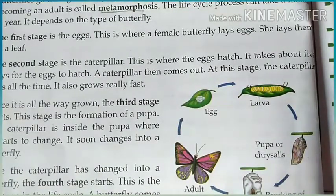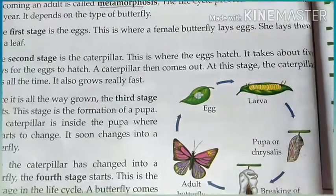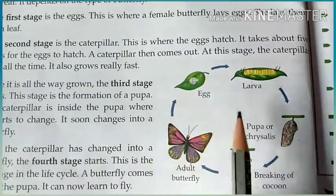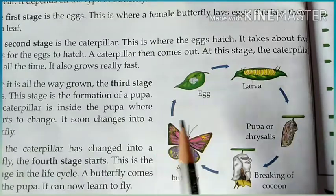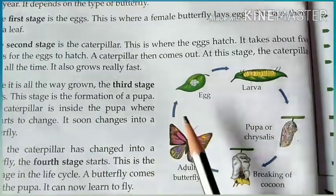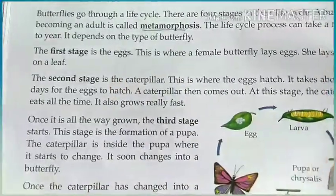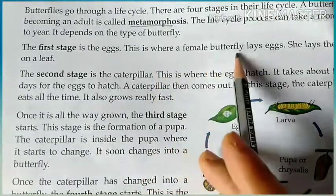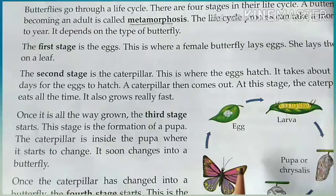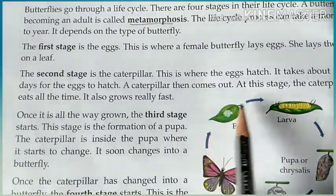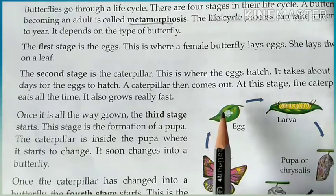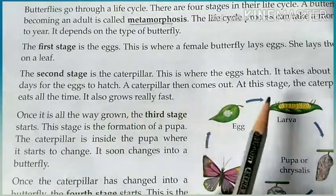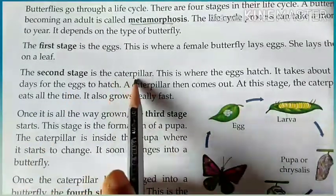The first stage of the butterfly life cycle is the egg. A female butterfly lays eggs on a leaf. That is the first stage.